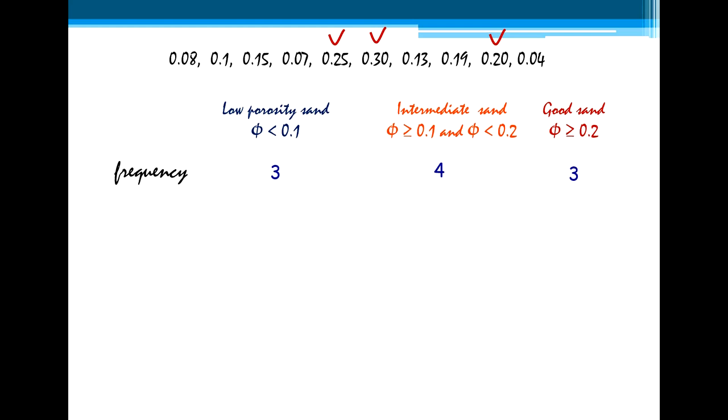But we can also calculate the relative frequency, relative to the total number of samples. In this case, we have ten samples. So it is easy to calculate the relative frequency. The relative frequency is 3 over 10, which is 0.3. In the second class, we have 0.4 and 0.3.